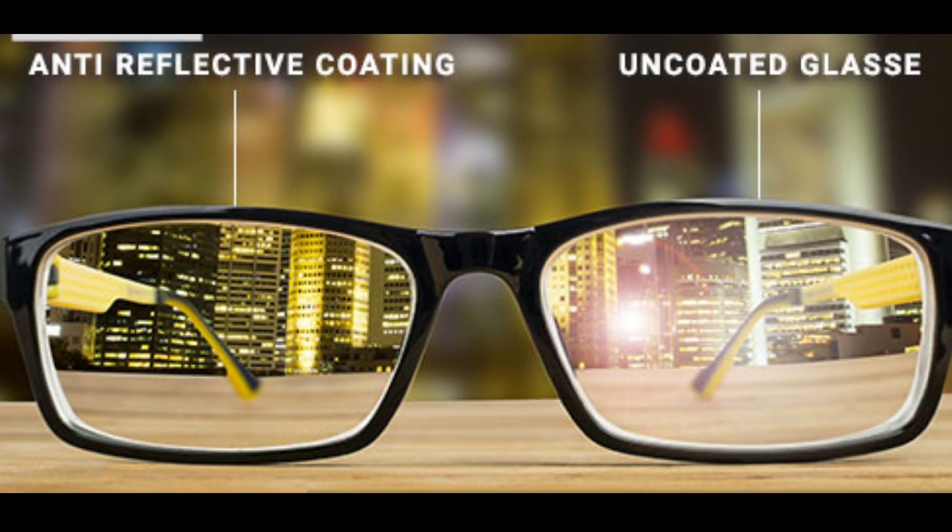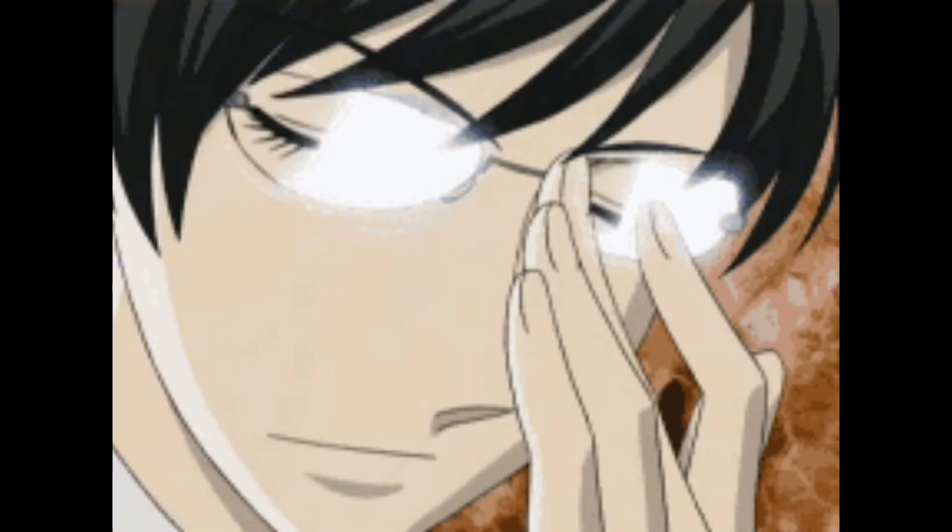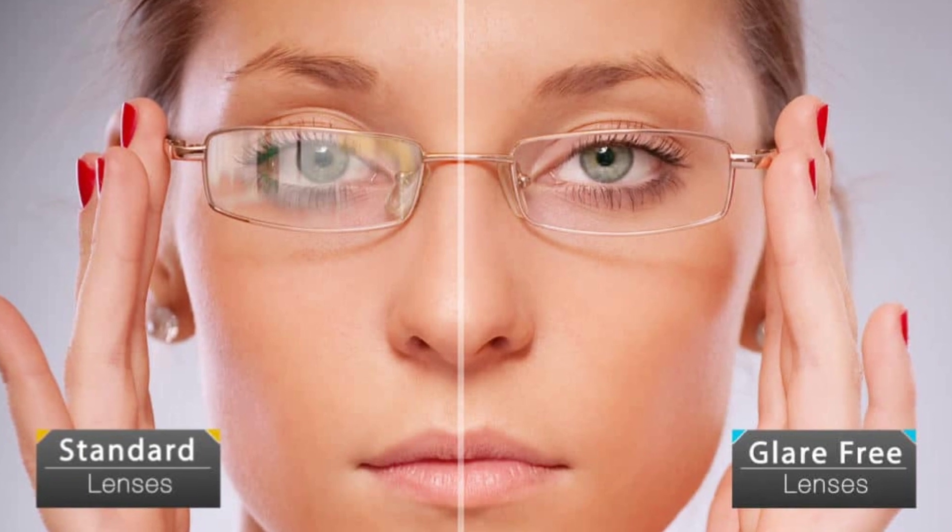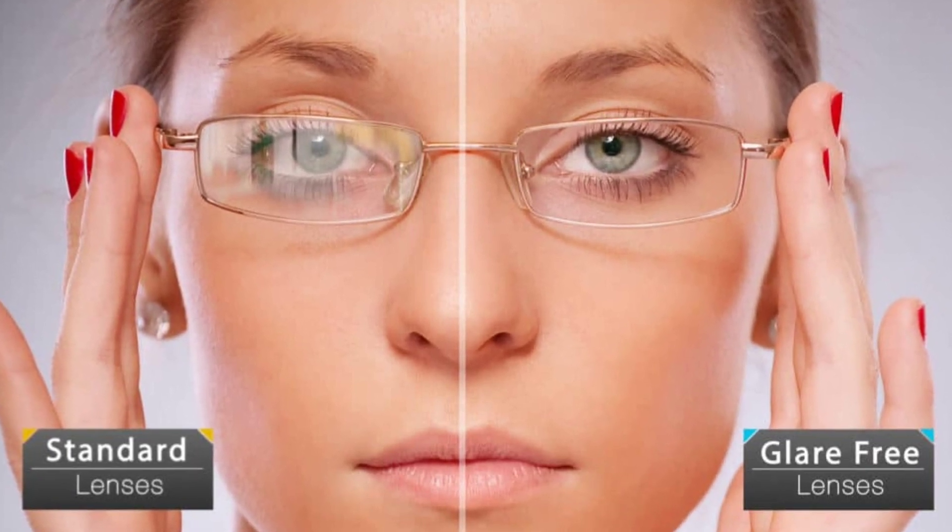Anti-reflective coatings protect you from glare and other harsh reflections. They can help anybody, but they're especially beneficial if you have a high index material, as they reflect more light.